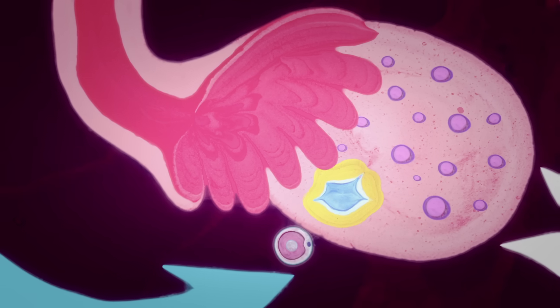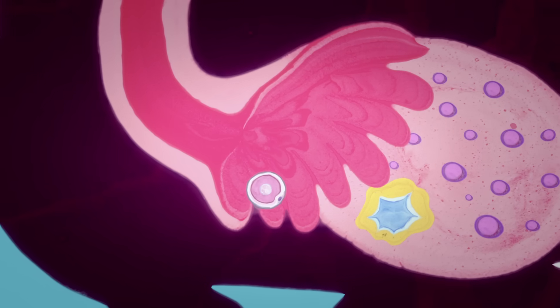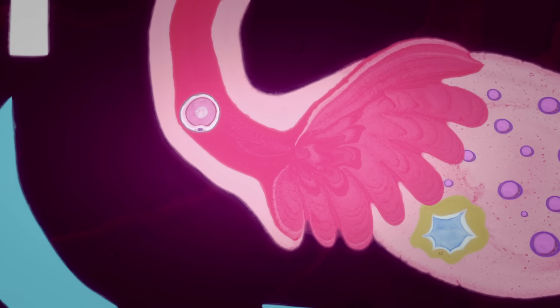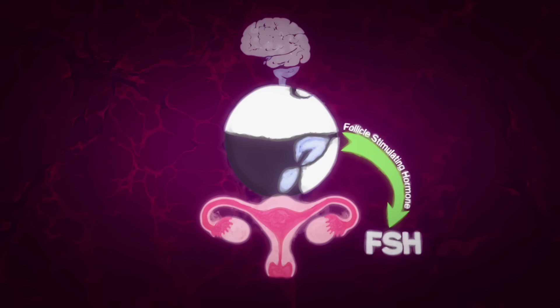Once the egg leaves the ovary, it is directed into the fallopian tube by the finger-like fimbriae. If the egg is not fertilized by sperm within 24 hours, the unfertilized egg will die, and the entire system will reset itself,